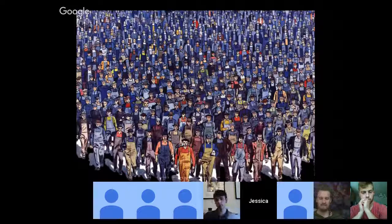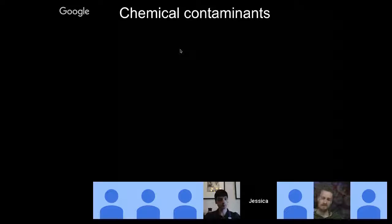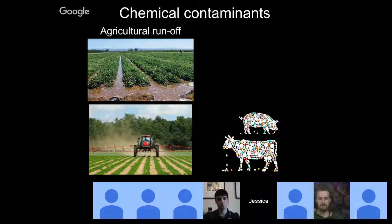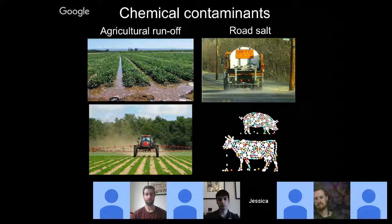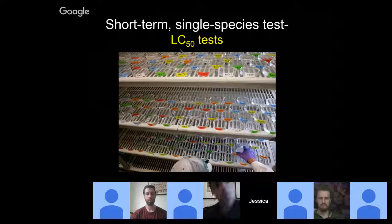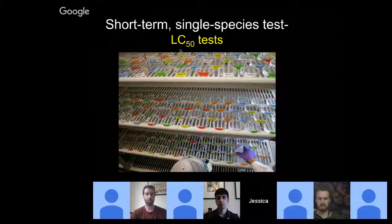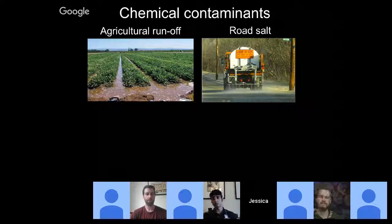Broadly, my lab is interested in understanding what human populations do to aquatic ecosystems — specifically chemical contaminants. We have people working on things like pesticides from agricultural runoff, pharmaceuticals such as antibiotics used in livestock, and also road salt. When thinking about these contaminants, the first step is usually short-term single species tests, which help us understand direct effects.